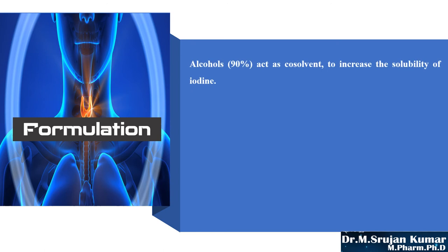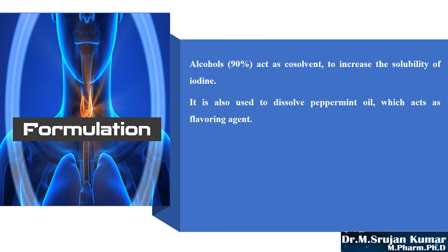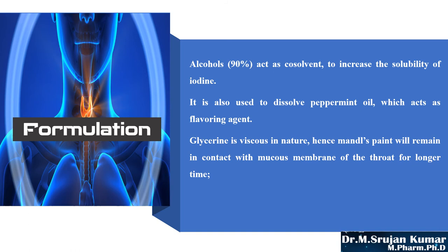Moving on to the next ingredient: alcohol. Alcohol is added to the formulation for two purposes — first, as a co-solvent to increase the solubility of iodine; second, to dissolve peppermint oil, which is used as a flavoring agent in the formulation. The next ingredient is glycerin: glycerin increases the viscosity of the formulation and also acts as a humectant and soothing agent.